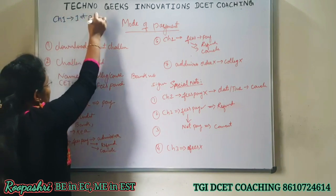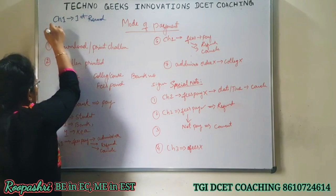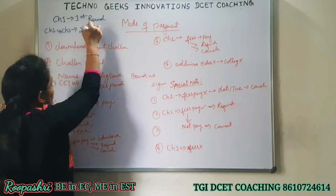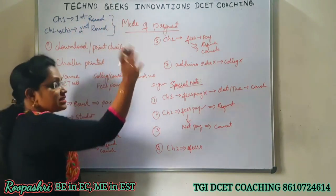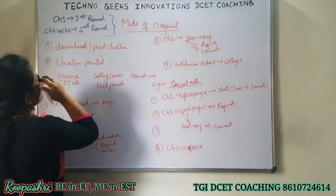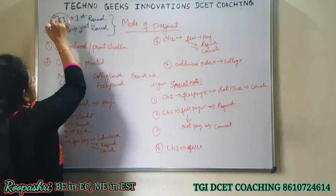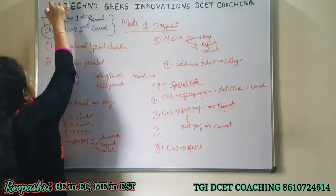So, if you click choice 2 or choice 3, you will proceed in the second round. Only 2 rounds - there are no further rounds after that. So, if you click choice 1 or choice 2, you must pay the fees. If you don't pay fees, you cannot proceed.